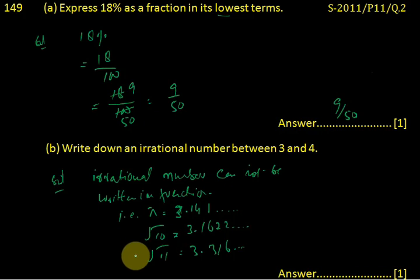These are all irrational numbers and cannot be expressed as fractions: pi, root 10, root 11, and so on. But remember the value must be less than 4.